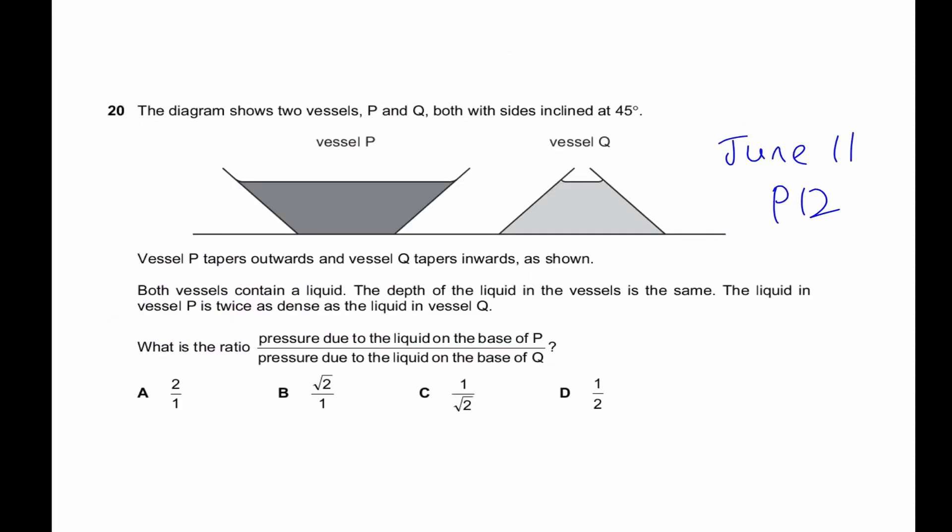For this question, they gave you two vessels with two shapes here, inclined at 45 degrees. One tapers outwards, which is here, the other one tapers inwards, which is this way. Both vessels contain a liquid but the depth is the same, so they're saying that this depth and this depth will be the same. The density is not the same though.